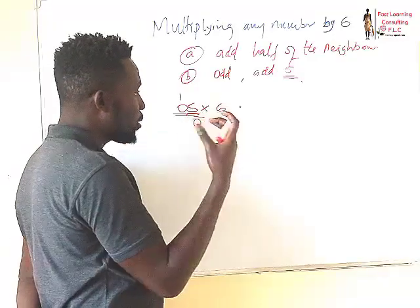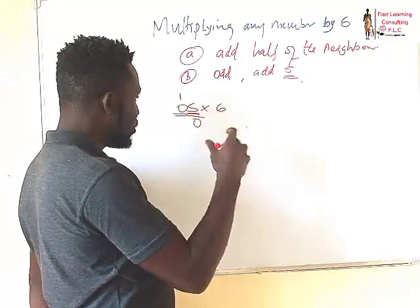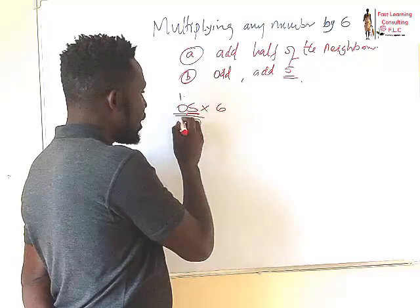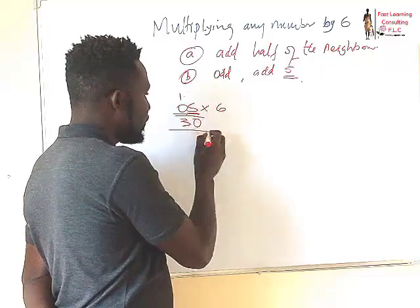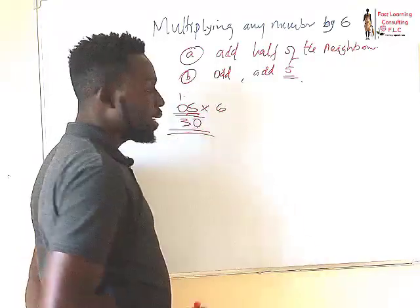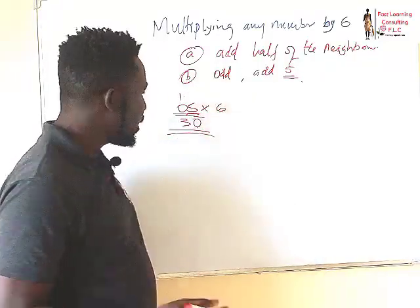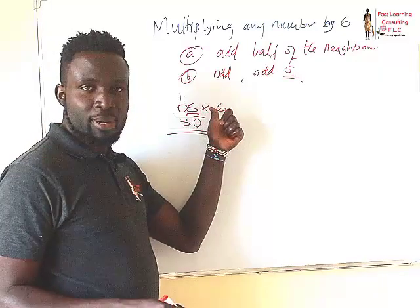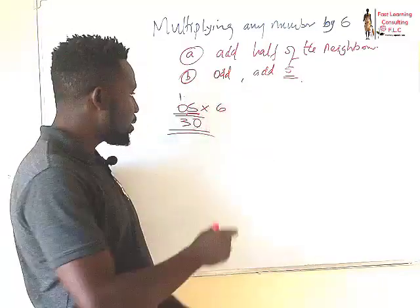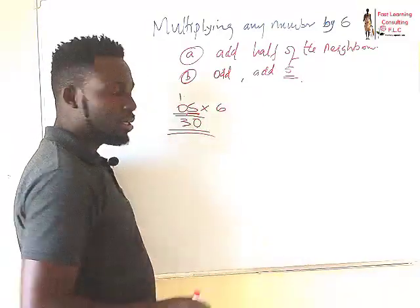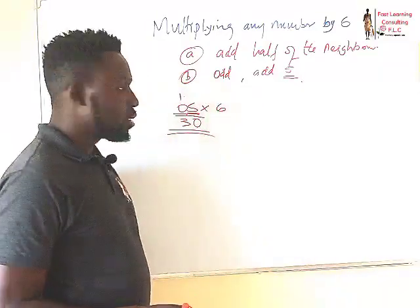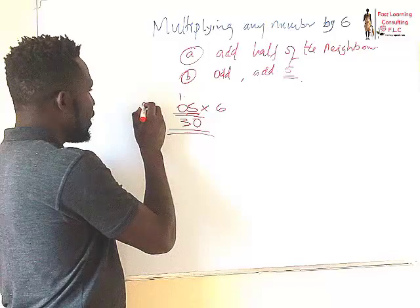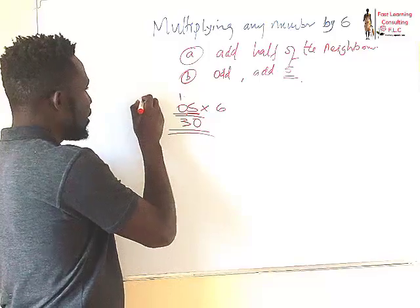We take the 2, then add the carried 1, which becomes 3. And that's how 5 multiplied by 6 becomes 30. That's just example one.